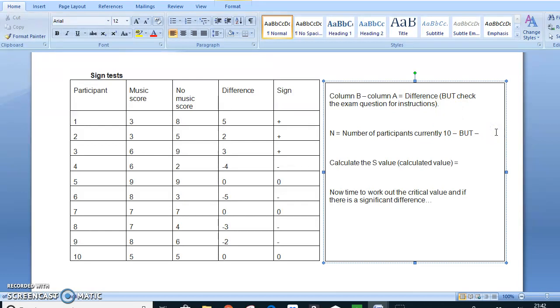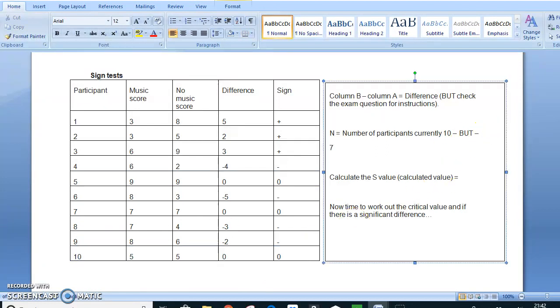Now, it says here N. If you remember, N is the number of participants. You'll need that information to work out the critical value later. So number of participants is currently 10. But if you remember, I said those who get 0 values, they're taken out. So as you can see, there's 3 of them in this data set. So I'm going to have to remove those 3 participants. So in actual fact, we end up with 7. So N equals 7.